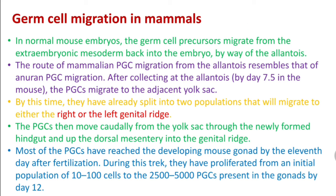Lastly, we will discuss germ cell migration in mammals, using the mouse embryo as an example. In mouse embryos, germ cell precursors migrate from the extra-embryonic mesoderm back into the embryo by way of the allantois. The route of mammalian PGC migration from the allantois resembles that of anuran PGC migration.